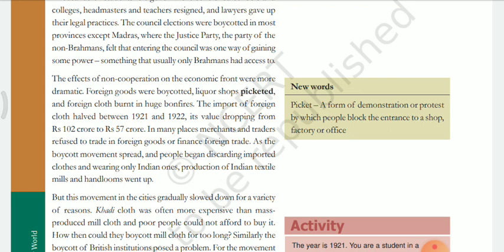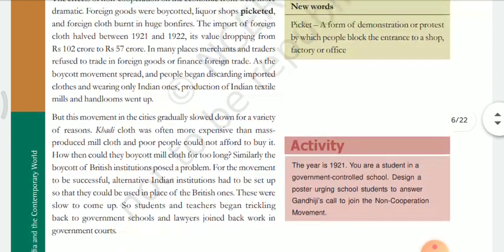But this movement in the cities gradually slowed down for a variety of reasons. Khadi cloth was often more expensive than mass-produced mill cloth and poor people could not afford to buy it. Similarly, the boycott of British institutions posed a problem — alternative Indian institutions had to be set up but were too slow to come up. So students and teachers began trickling back to government schools, and lawyers rejoined work in government courts.